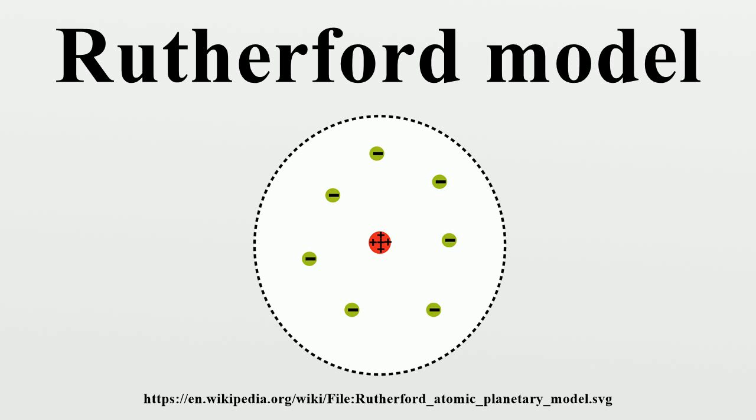Rutherford's new model for the atom, based on the experimental results, contained the new features of a relatively high central charge concentrated into a very small volume in comparison to the rest of the atom, with this central volume also containing the bulk of the atomic mass. This region would be known as the nucleus of the atom.